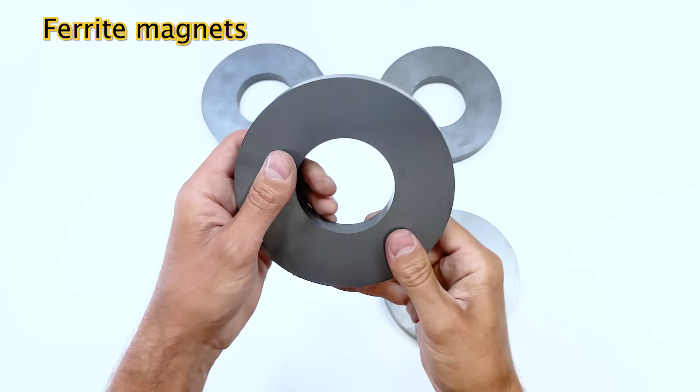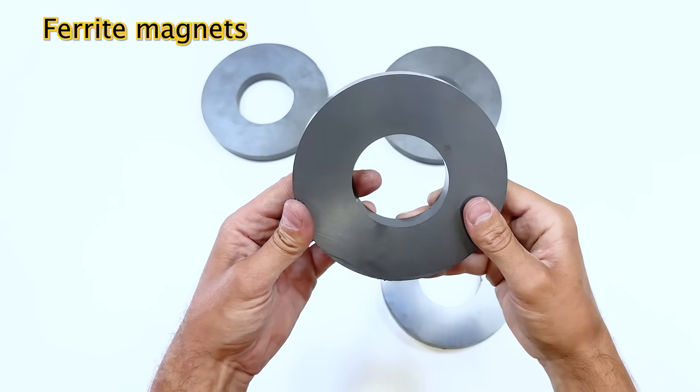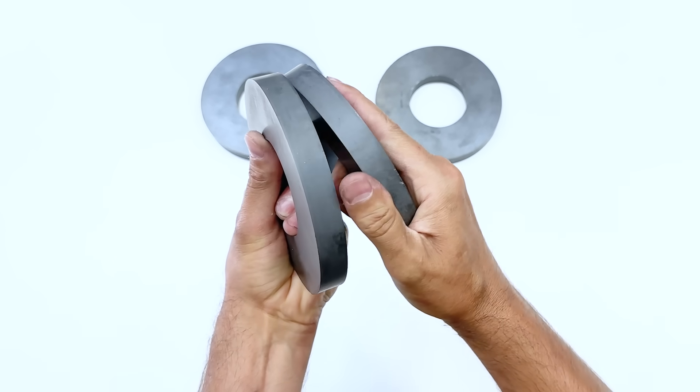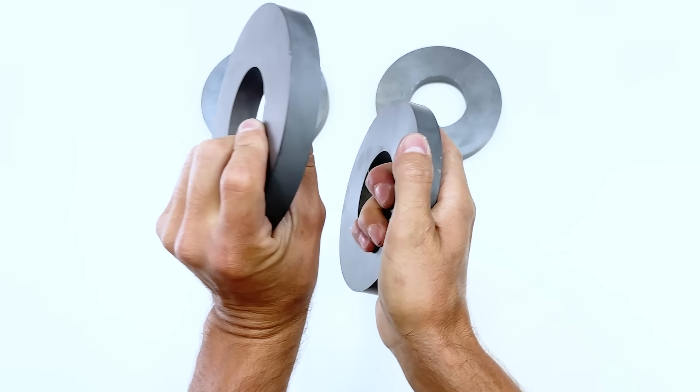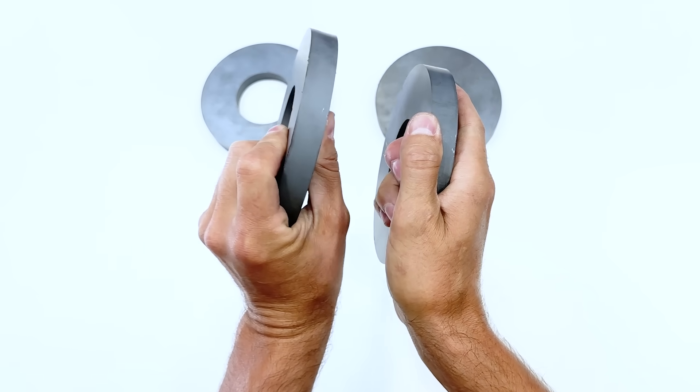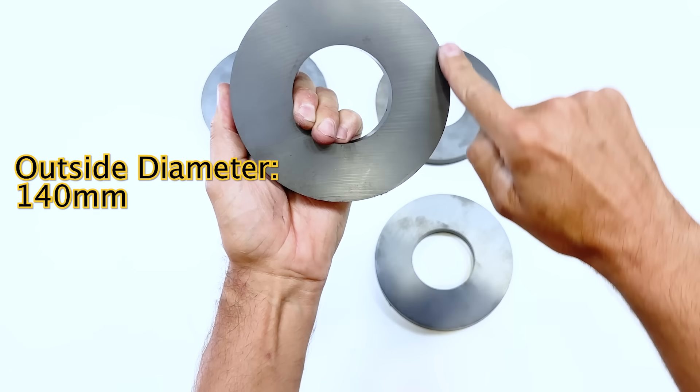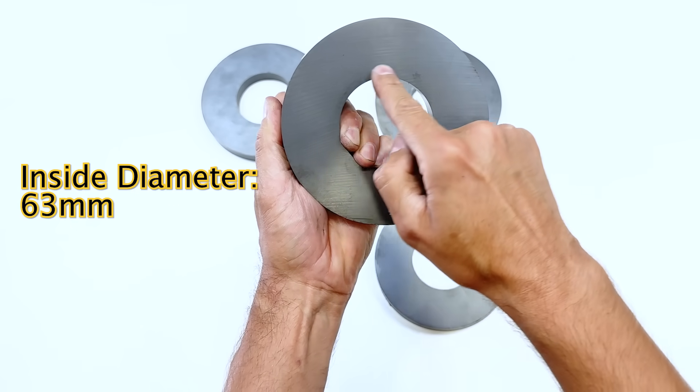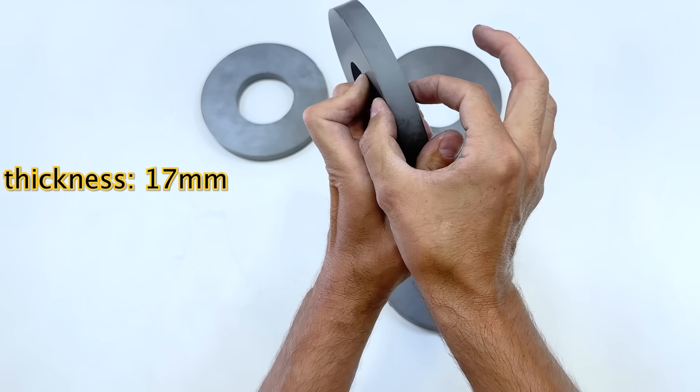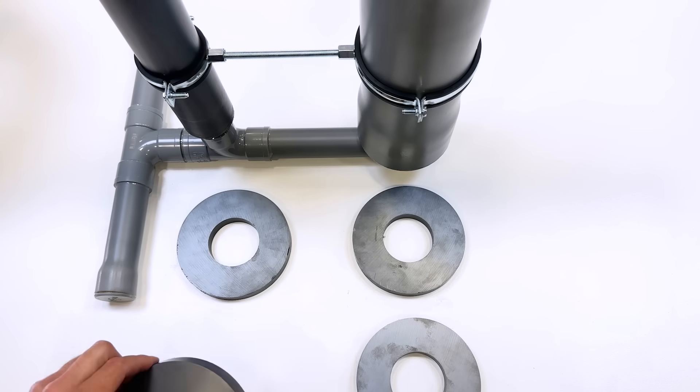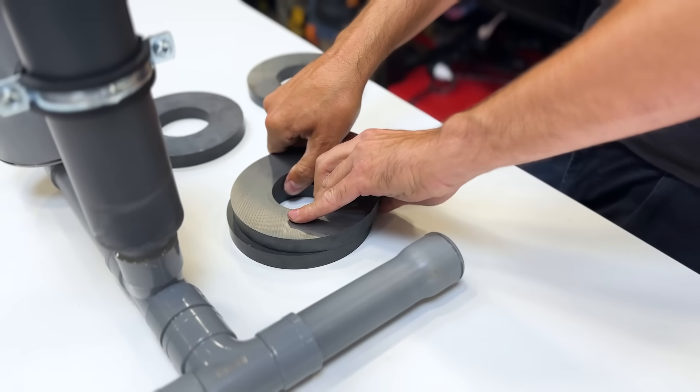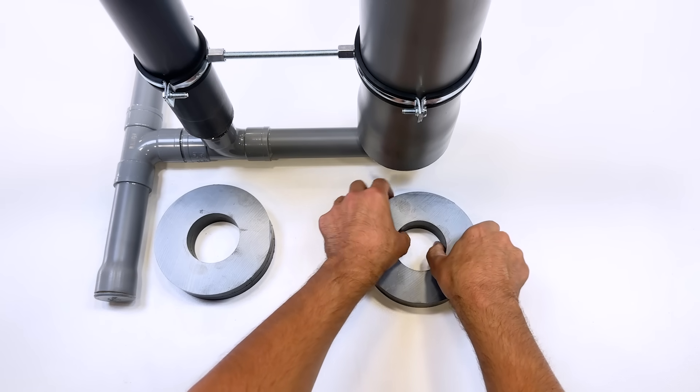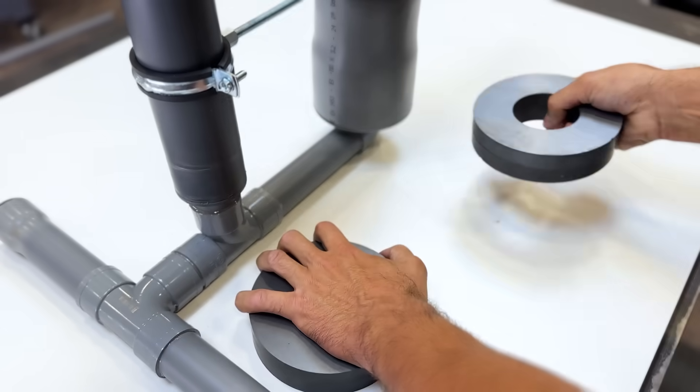Now we're going to install the key to the entire system, the ferrite magnets. We must connect them two by two. Like all magnets, they attract in one direction and repel in the other. The outer diameter is 140 millimeters and the inner diameter is 63 millimeters. Each magnet is 17 millimeters thick. We must join them two by two. We must be careful because they are very fragile and we could also injure ourselves. The adhesive will not be necessary.